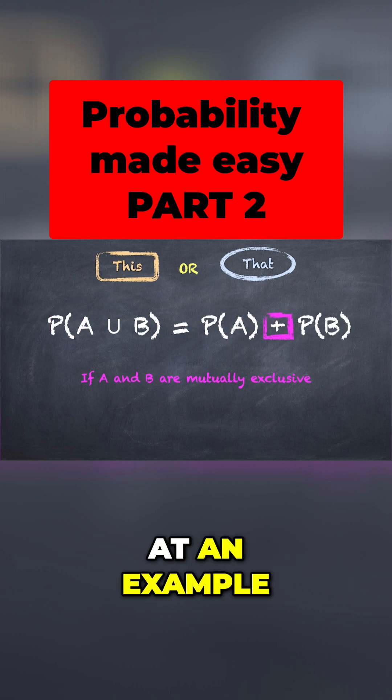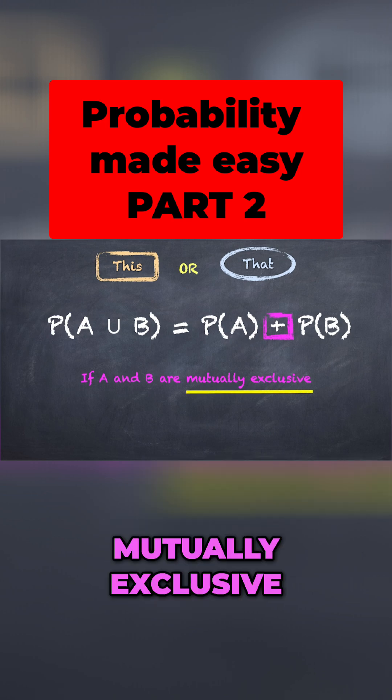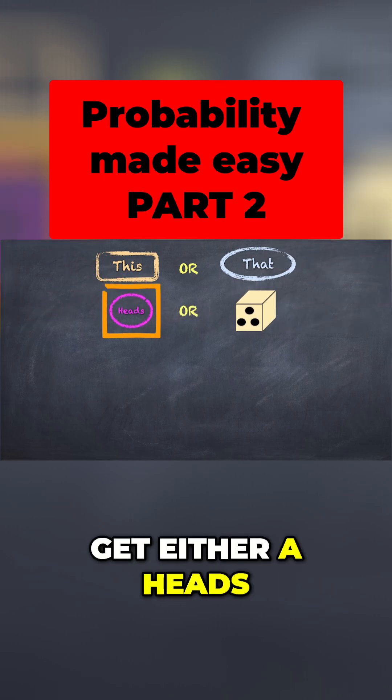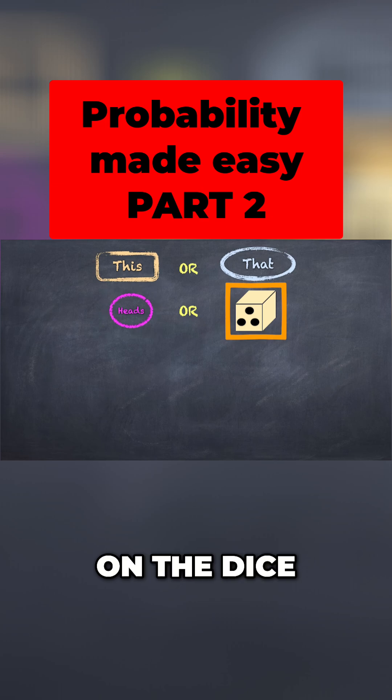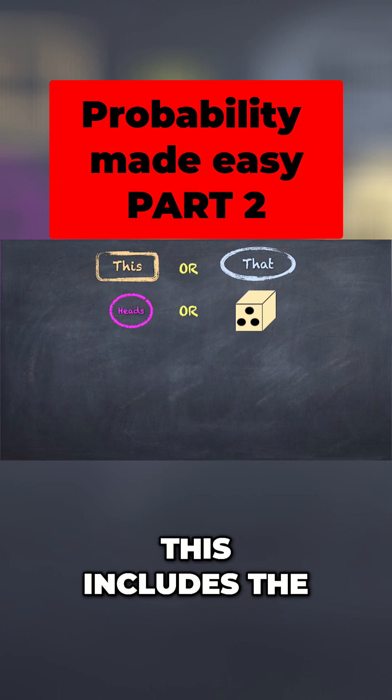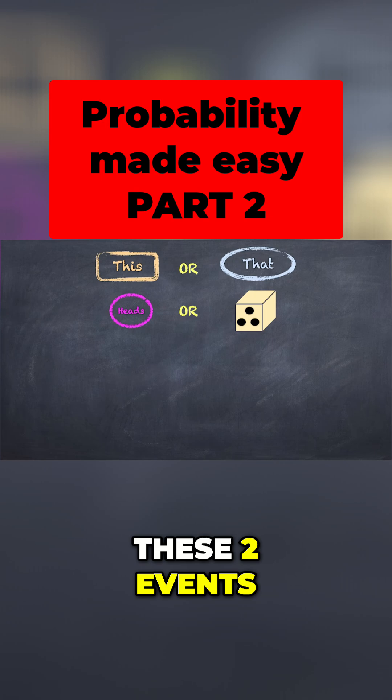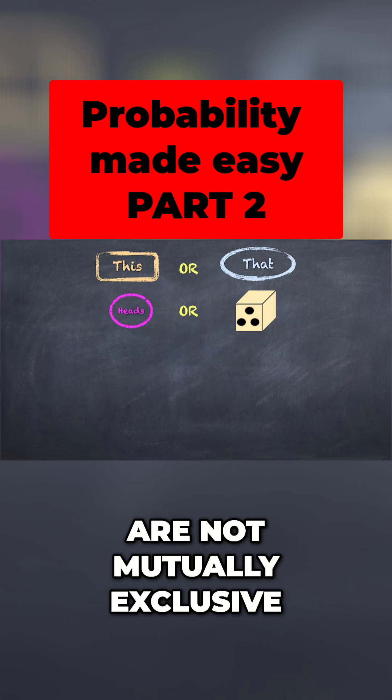So let's look at an example where the events aren't mutually exclusive. Now we spin a coin and we throw a dice. What are the chances that we get either a heads on the coin or a 3 on the dice? But note that this includes the possibility that we get a heads and a 3 at the same time. These two events are not mutually exclusive.